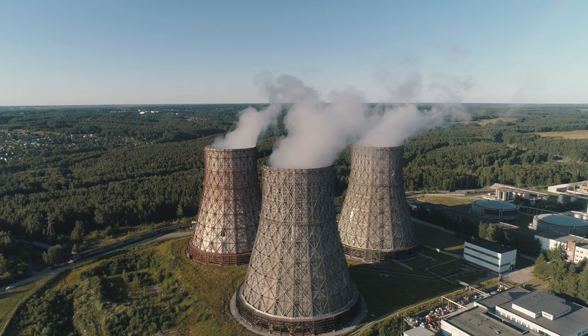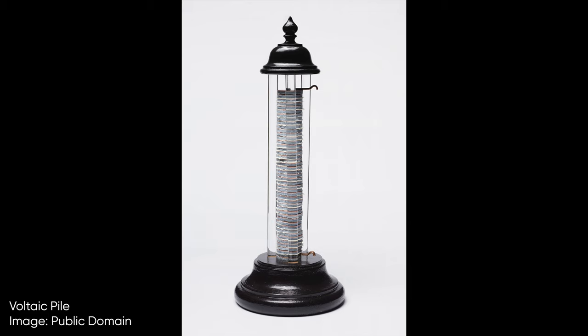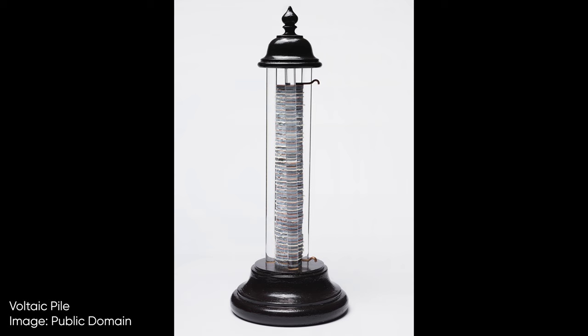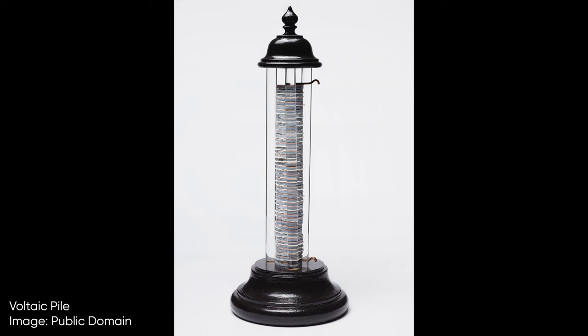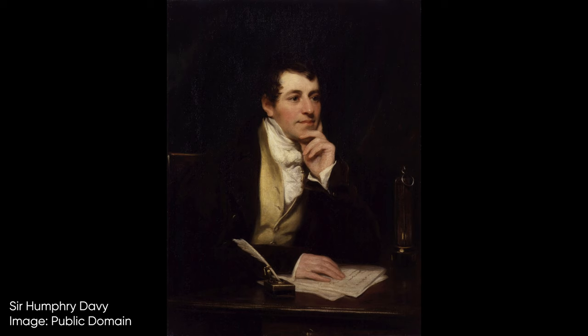In the early 1800s, people knew about electricity, but we were only at the beginning of our ability to control it. There were no power plants or electrical grids, but there were batteries. In 1800, Alessandro Volta developed the Voltaic Pile, a primitive battery. Some sources say that Volta demonstrated a glowing copper wire connected to this battery.